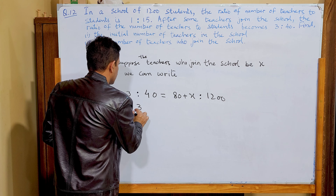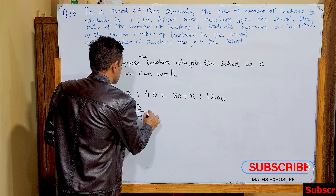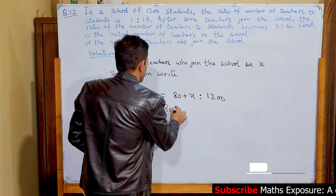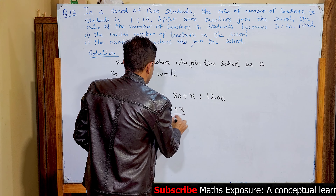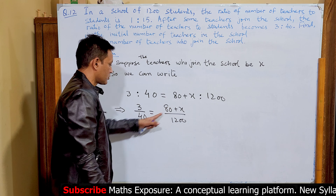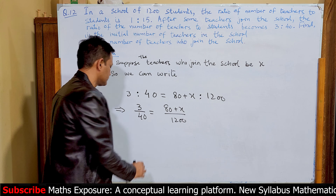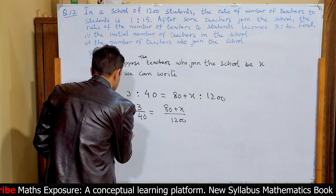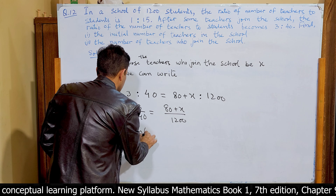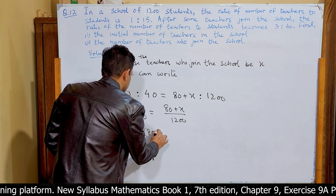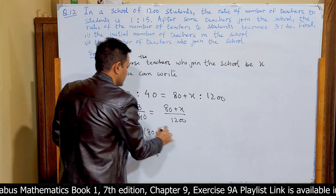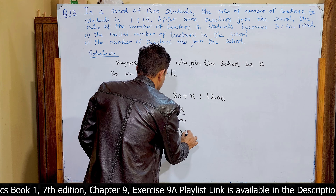We set up the equation: 3/40 = (80 + x)/1200. Now we cross-multiply: 40 × (80 + x) = 1200 × 3, which gives us 40(80 + x) = 3600.